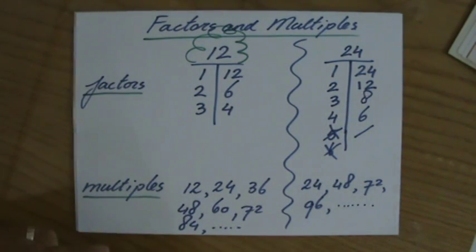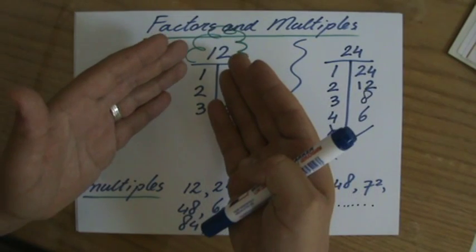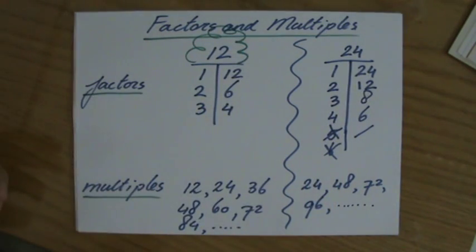So the factors, if you like, are inside the number, and the multiples are outside the number. I hope that was useful. Let's go to the next video.